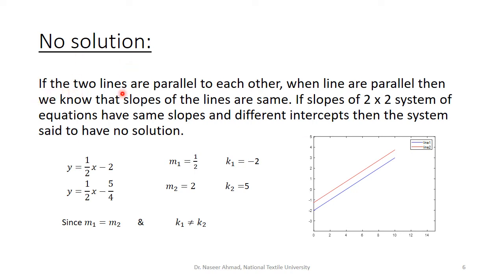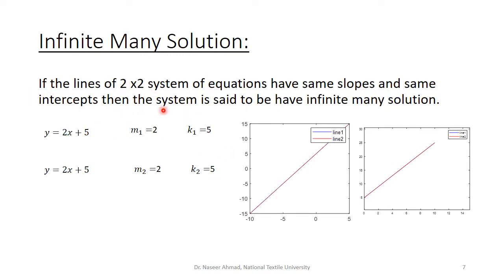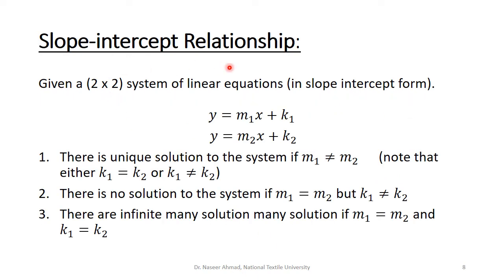For no solution, when lines are parallel to each other, the slopes of the lines are equal. If a two-by-two system has the same slopes and different intercepts, the system is said to have no solution. For infinite solutions, if the lines have the same slopes and the same intercepts, the system is said to have infinite solutions.